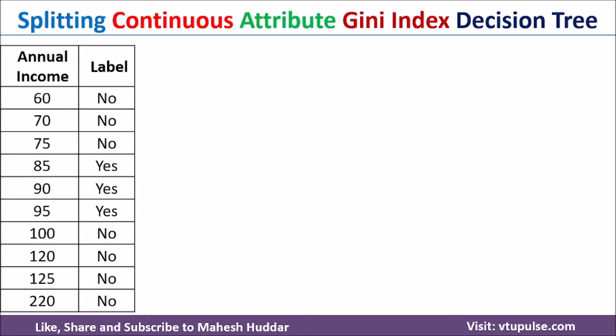The very first thing we need to do is arrange this particular continuous valued attribute in increasing order if it is not already given. In this case, it is already given in increasing order, so there is no need to rearrange it.